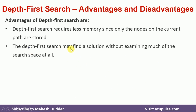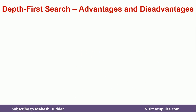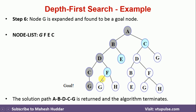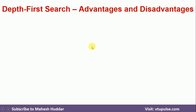The second advantage is that depth first search may find solutions without examining much of the search space at all. We found G without visiting many of the other states, which is an advantage of DFS over BFS.